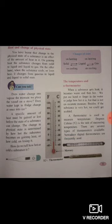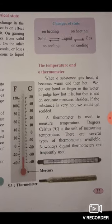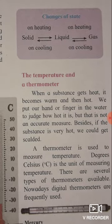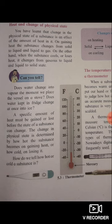On the other hand, when a substance cools — meaning when we remove heat from it or it loses heat — it changes back from gas to liquid, and then from liquid to solid. As shown in the diagram: on heating, solid becomes liquid, and liquid becomes gas; on cooling, the reverse direction is shown — gas becomes liquid, and liquid becomes solid.